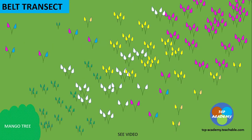Here we have a landmass where we're looking at the distribution of organisms. We're going to be taking the point of origin from this mango tree at the bottom left of your screen, and we're going to be going upward through this organism.